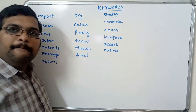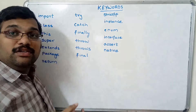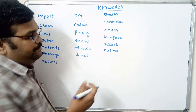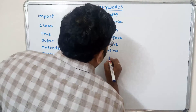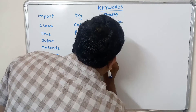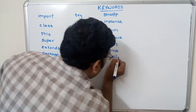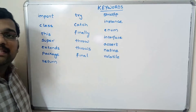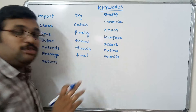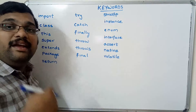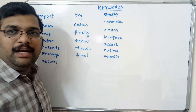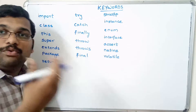The native keyword is used as a modifier for a method. The volatile keyword is applied to variables — whatever variables are created using this keyword, all reading and writing operations will be done directly on the main memory, meaning the variable values are stored in the main memory.